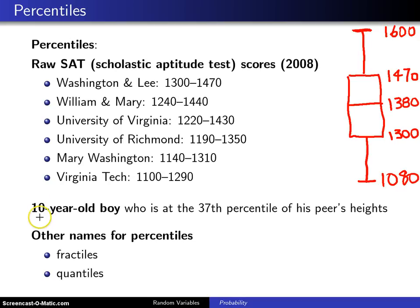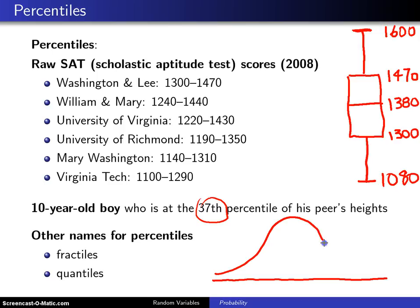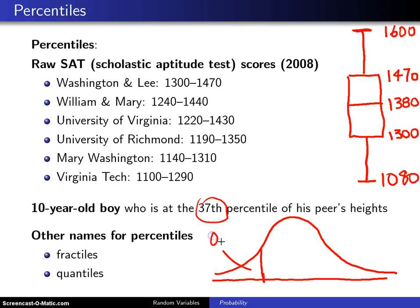As a second example, what is the story if a 10-year-old boy is at the 37th percentile of his peers' heights? Heights tend to have a bell-shaped distribution, so this might be the distribution of all 10-year-old boy heights. This particular boy is at the 37th percentile, which means 37% of the area falls to the left of his height and 63% of the area under this curve falls to the right.